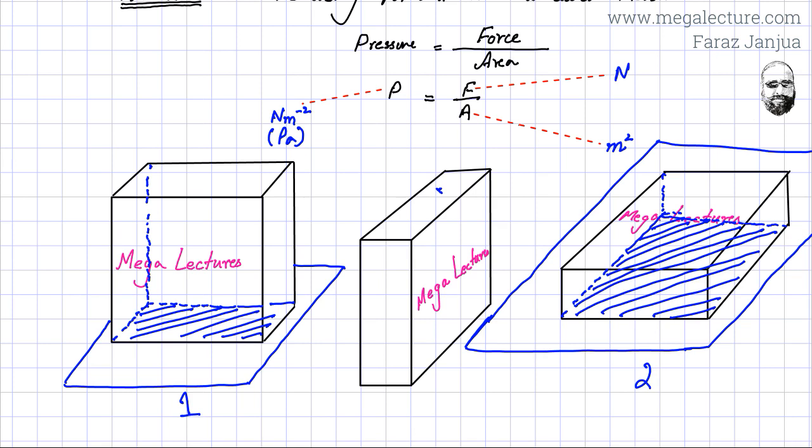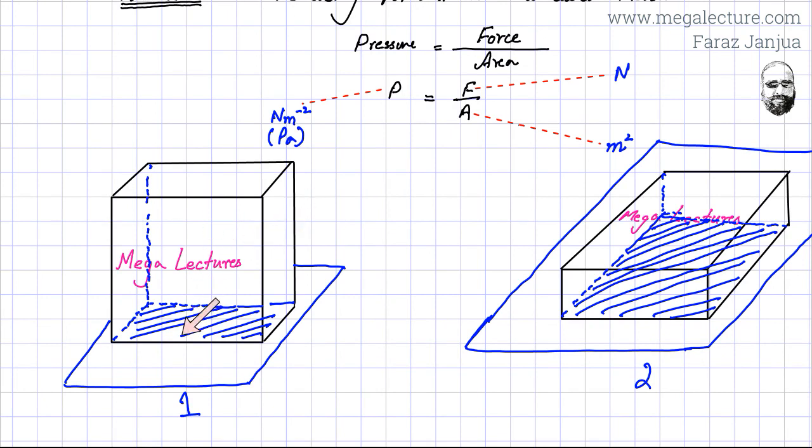Let's compare the second diagram with the first diagram and ignore the middle one. Let me vanish this one. Magic, gone. Now, as both objects are the same object, it is definite that they have the same force or same weight that they are exerting on the table. But in this case, the same weight is acting on a smaller area, and in this case, the same weight is acting on a larger area. So which object is exerting more pressure on the surface of the table? The answer will be this one.